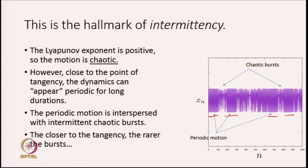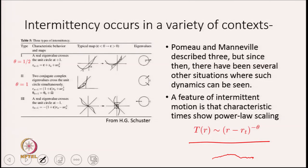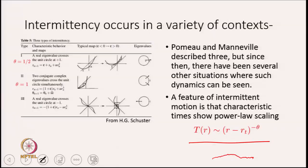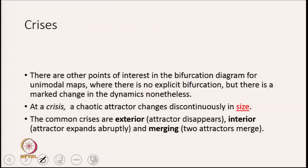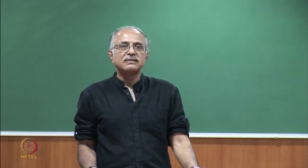There are other types of intermittency that people have discussed, but all of them by and large will have this power-law scaling form. Basically, you have motion of one kind interspersed with motion of the other kind, and at the point of bifurcation you have all motion of the one kind, so you can always distinguish between the two types of motion contributing to the intermittency. Another scenario where intermittency happens is at what are called crises — special points in the bifurcation diagram, quite common in many kinds of systems.